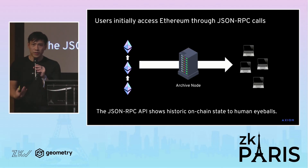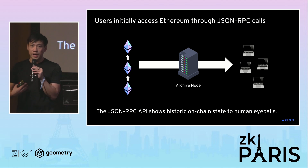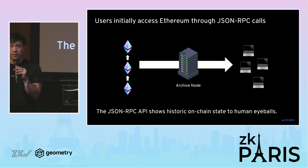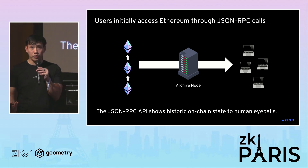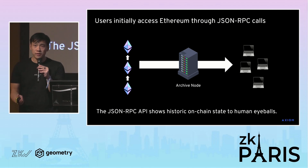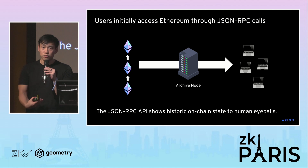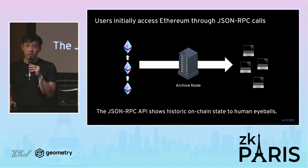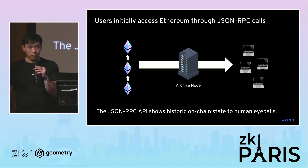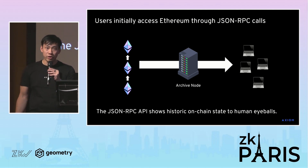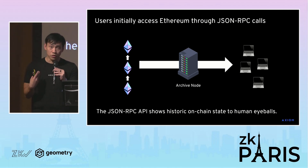I want to start by covering how we typically access data on Ethereum as users — through this JSON RPC interface that all full nodes and archive nodes expose. The purpose of this API is essentially to deliver information about the state of Ethereum to the human eyeball. A web front end would query the state of the chain, possibly through an external service or in rare cases through your own node, and deliver these numbers to your users.